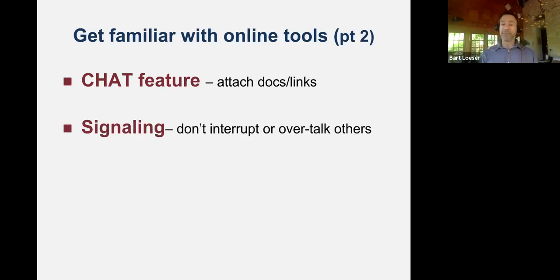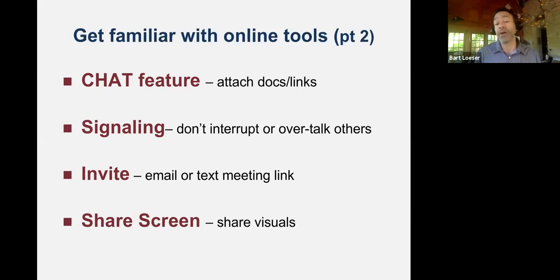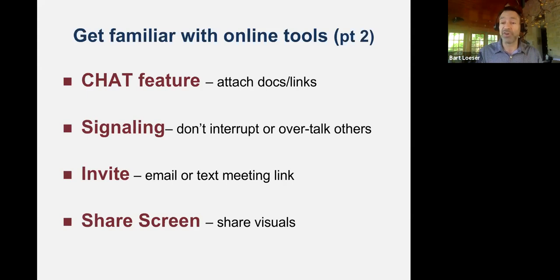Signaling people is important as well. If you have something to say, you might raise your hand so you don't talk over people, which can be a problem in meetings. If someone's not there, you can invite them by easily sending them the meeting link. And then the share screen feature is something to really practice, so you can share and unshare quickly without searching around. Take things off your computer so when you go to share screen, you don't have too many items to search through.